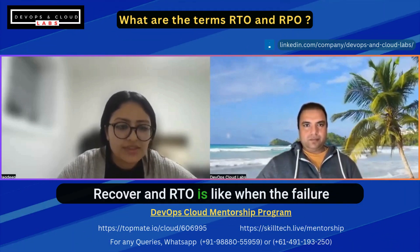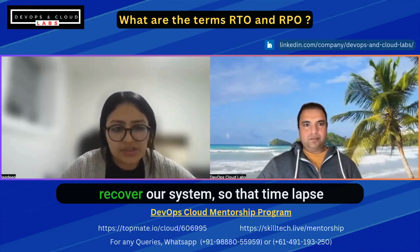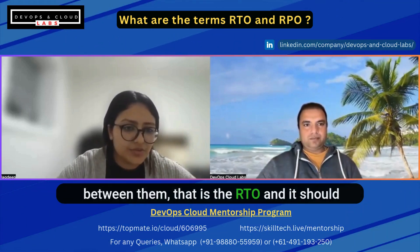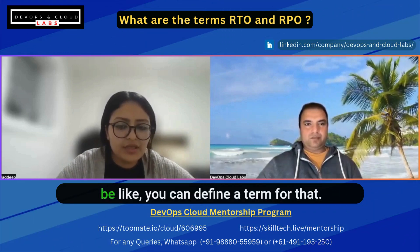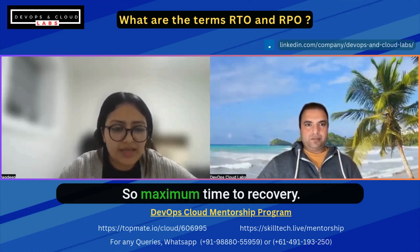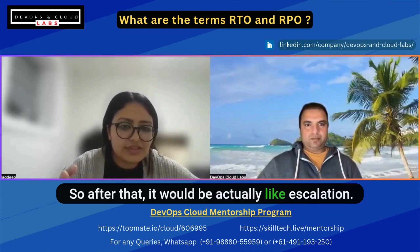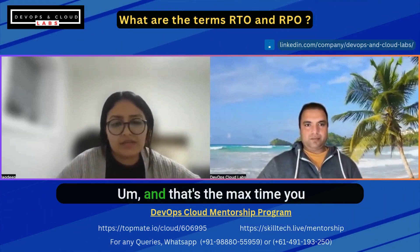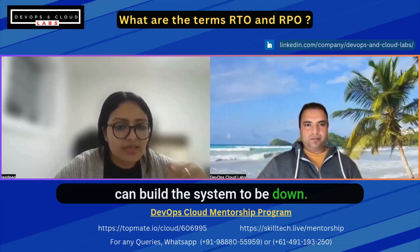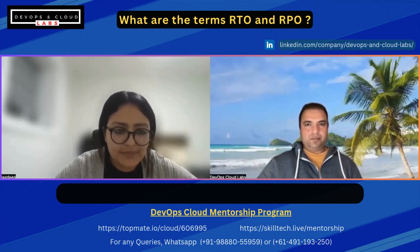RTO is the time lapse between when the failure happened and when we are able to recover our system. There's also MTTR — Maximum Time to Recovery — so after that it would be an escalation. That's the maximum time you can allow the system to be down, and you have to recover it within that maximum time.